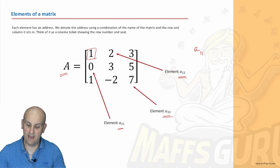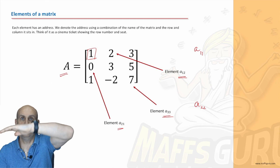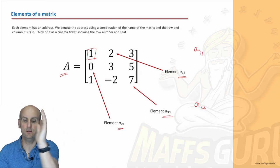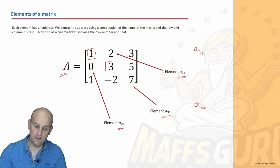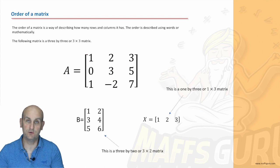So, if I ask you to find element A_2,2. Then hopefully you realize you'll be going to your second row, 1, 2. Your second column. And that therefore would give me 3 as my element. Now, there is maths related to this and there are questions coming up that ask you to sort about elements.